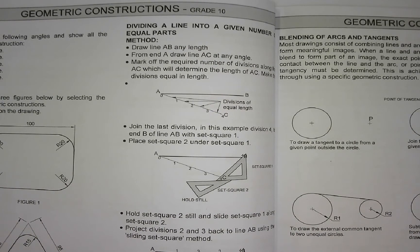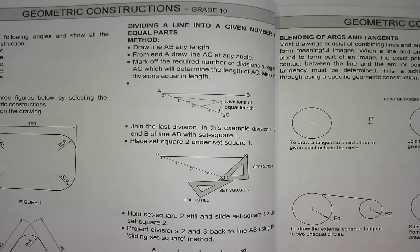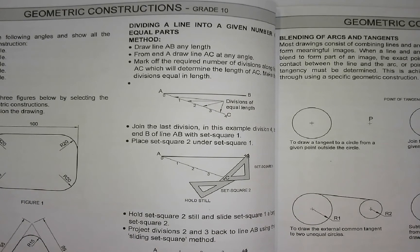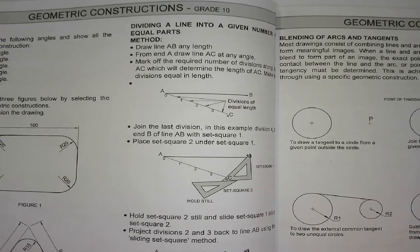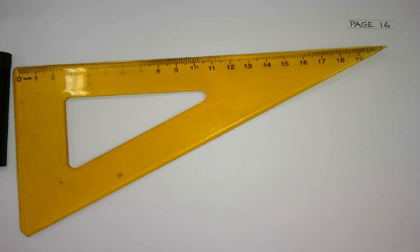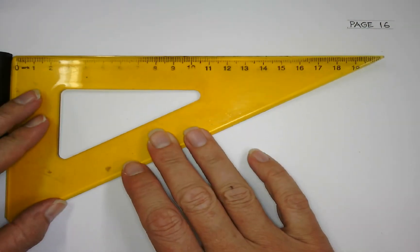If you have a look at the example they've given you, they've given you AB and they've asked you to divide it into four equal lengths. So the first thing we are going to do is...